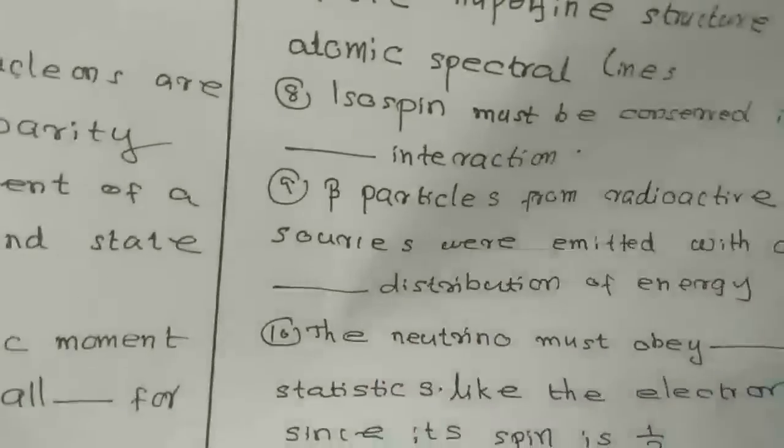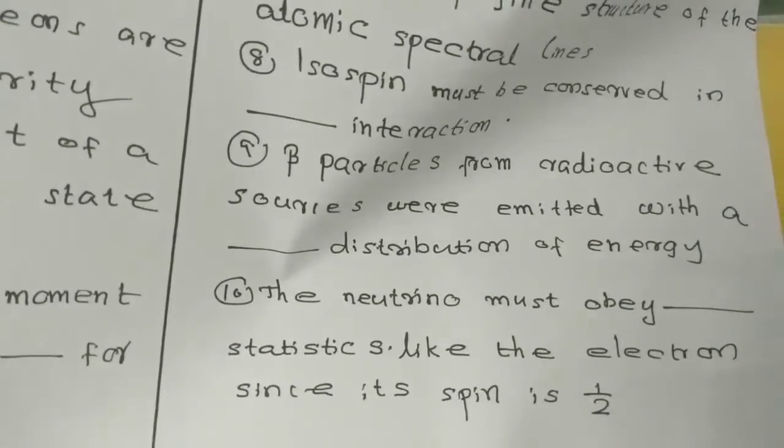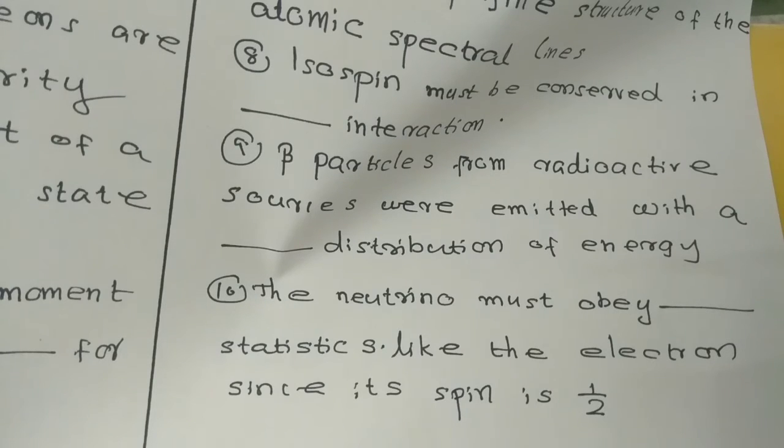Question number ten: the neutrino must obey dash statistics like the electron since its spin is one by two.